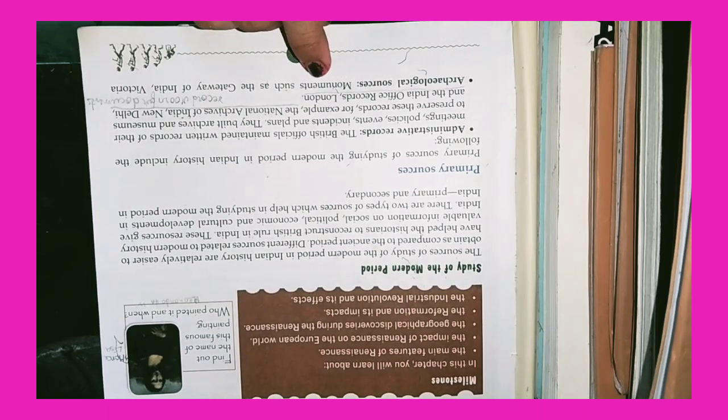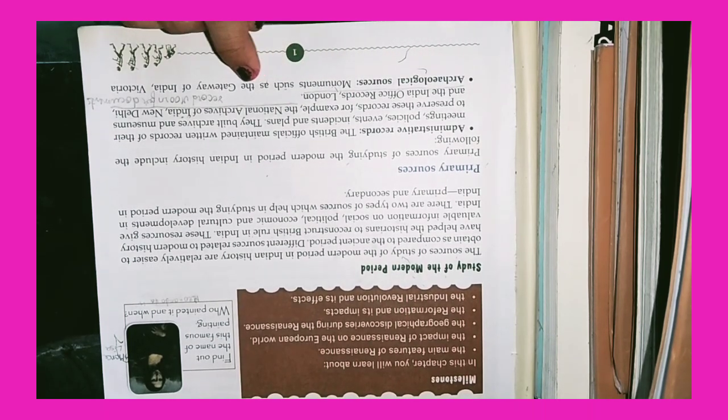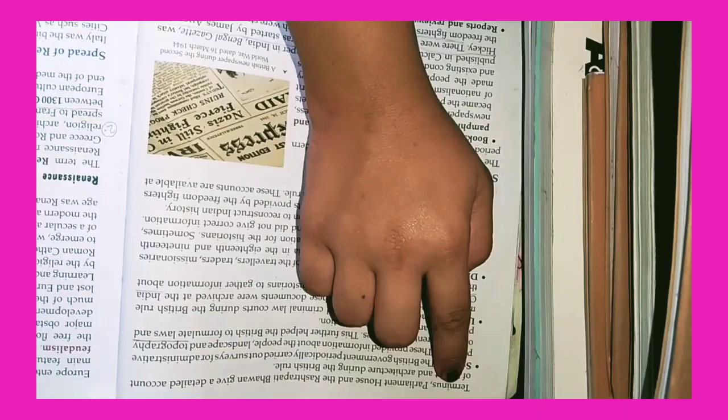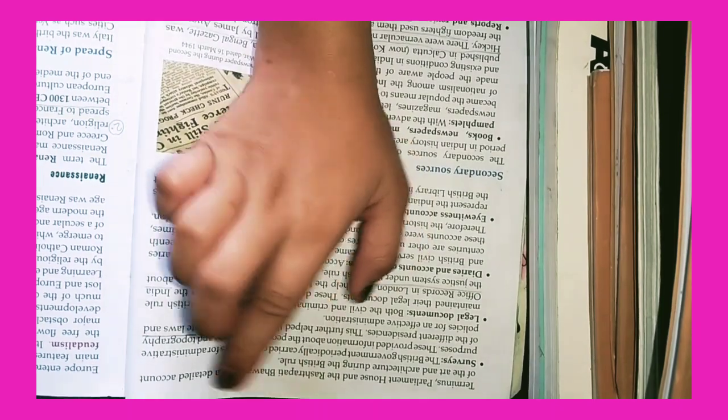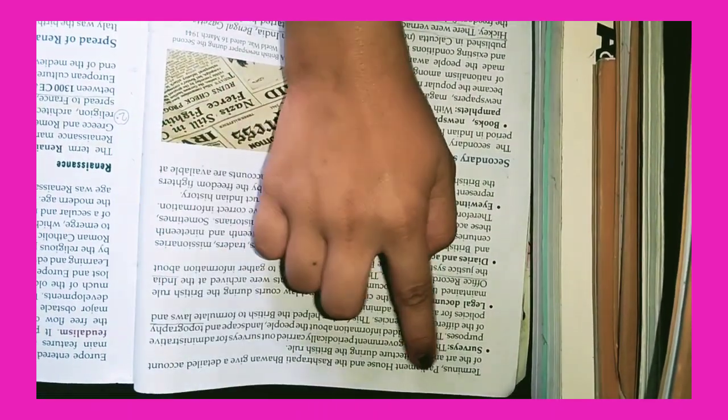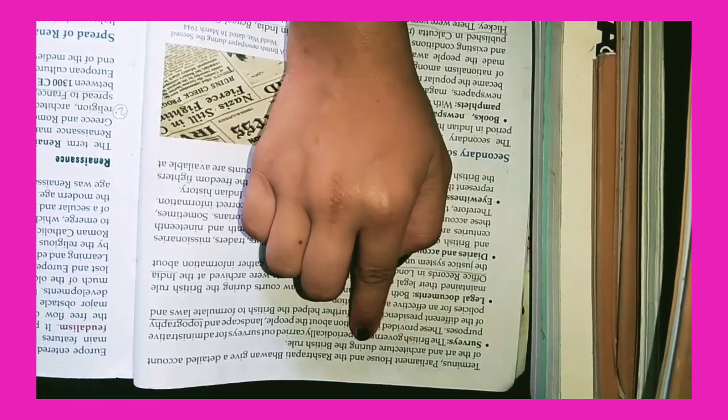Archaeological Sources: Monuments such as the Gateway of India, Victoria Terminus, Parliament House and the Rashtrapati Bhavan gave a detailed account of the art and architecture during the British rule.